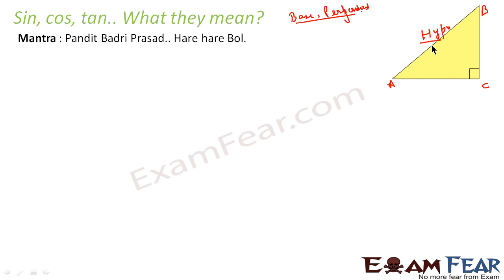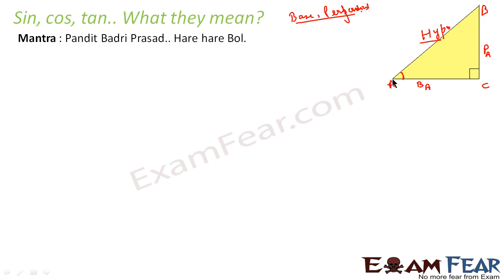The other two sides are base and perpendicular. But there is a little trick here: perpendicular and base actually vary. If you want to find sine, cos, and tan of angle A — if angle A is the frame of reference — then the side opposite to angle A is called perpendicular, and the side that is included in angle A that is not the hypotenuse is called the base.